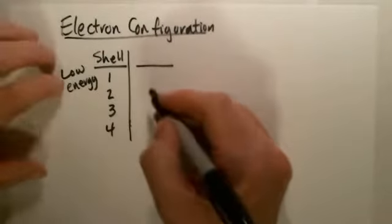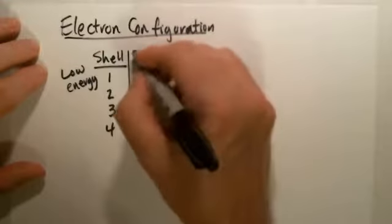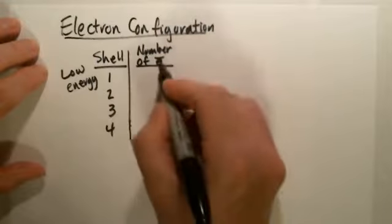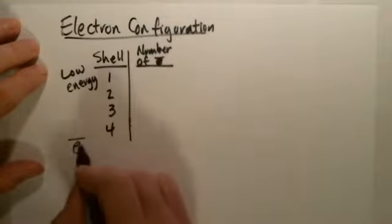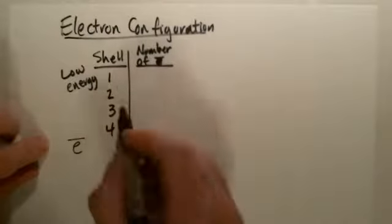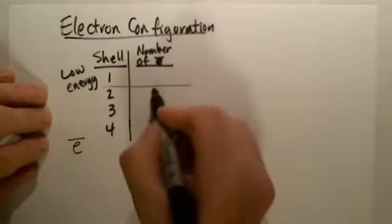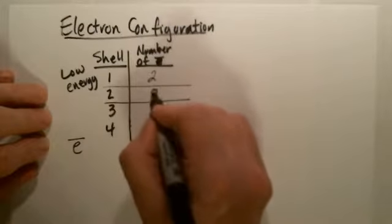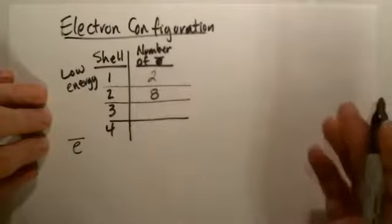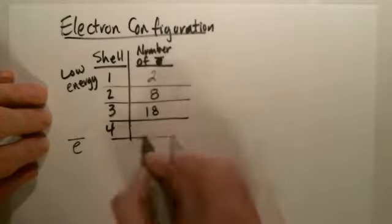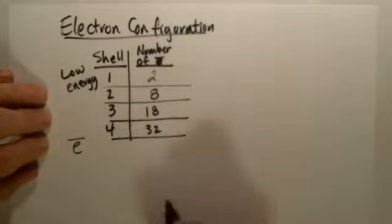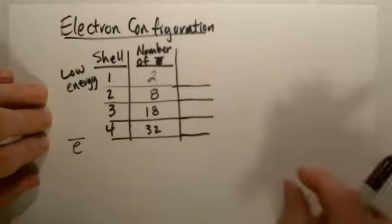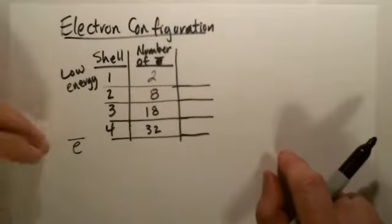The number of electrons for the first shell here is going to be two. The number of electrons in the second shell will be eight. The number of electrons in the third shell is going to be 18, and then the fourth shell is 32. The piece that you need to understand to help you with the electron configuration has to do with an orbital.